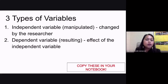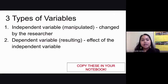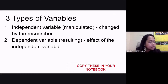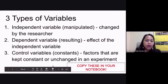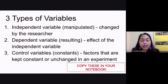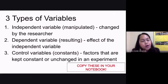Your dependent variable is also called the resulting variable. This is the effect of your independent variable — as the name suggests, it is dependent upon your independent variable. The last type of variable is your control variable, sometimes called constants. These are the things that remain unchanged in your experiment — the things you keep constant.